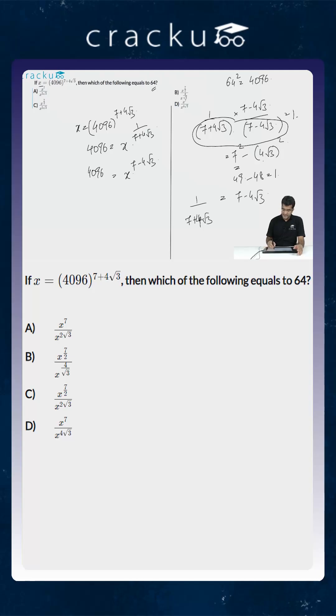We are asked to find out the value of 64. So 64 which is equal to square root of 4096 will equal x to the power 7 minus 4 square root of 3 divided by 2 or this is equal to x to the power 7 by 2 divided by x to the power 4 square root of 3 divided by 2 which is equal to 2 square root of 3. So that will be option C.